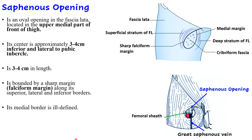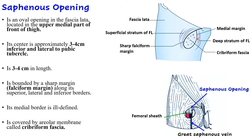The medial border of the saphenous opening is ill-defined. The gap between the lateral and medial margins is bridged by areolar tissue that has numerous holes — this is known as the cribriform fascia, which covers the saphenous opening and is loose areolar tissue in nature.